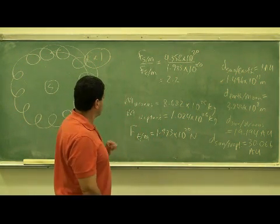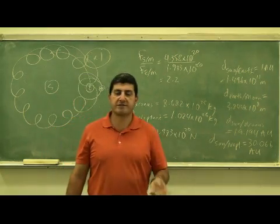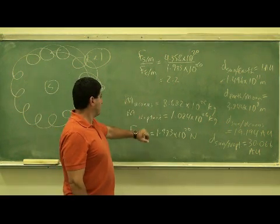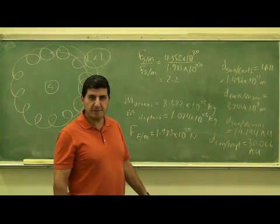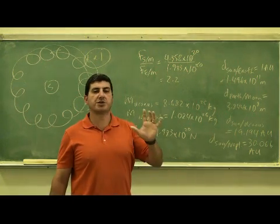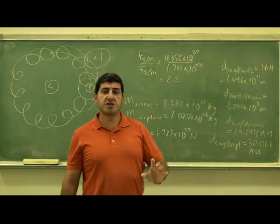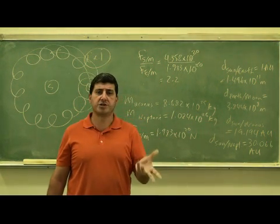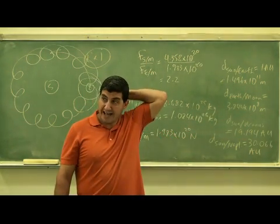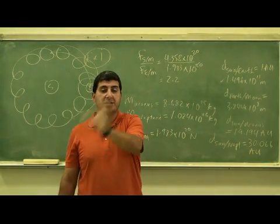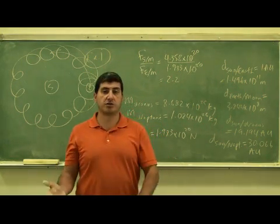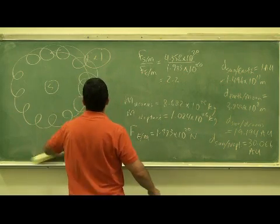Let's also do an example with Uranus and Neptune — historically very interesting. After the accidental discovery of Uranus by William Herschel, about 50 years later around 1830, John Couch Adams and Urbain Le Verrier studied the orbit of Uranus and noticed its orbit couldn't be explained by the Sun's gravity alone. They predicted the existence of Neptune outside Uranus's orbit because of its gravitational effect. Let's compare those as our next example.